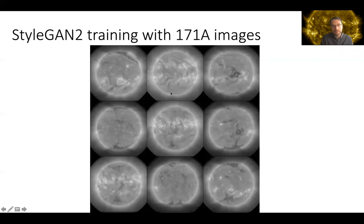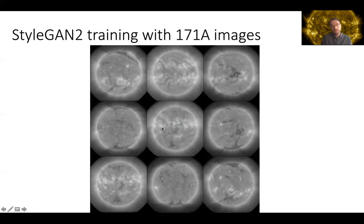Zooming in on a few of these images, we are really reaching a stage where it is hard even for a trained solar physicist to distinguish at first glance if an image is real or fake. You can see how the coronal holes look kind of realistic, and also the bands of active regions look as if they could make sense. We are still exploring more details of the comparison between fake and real images.